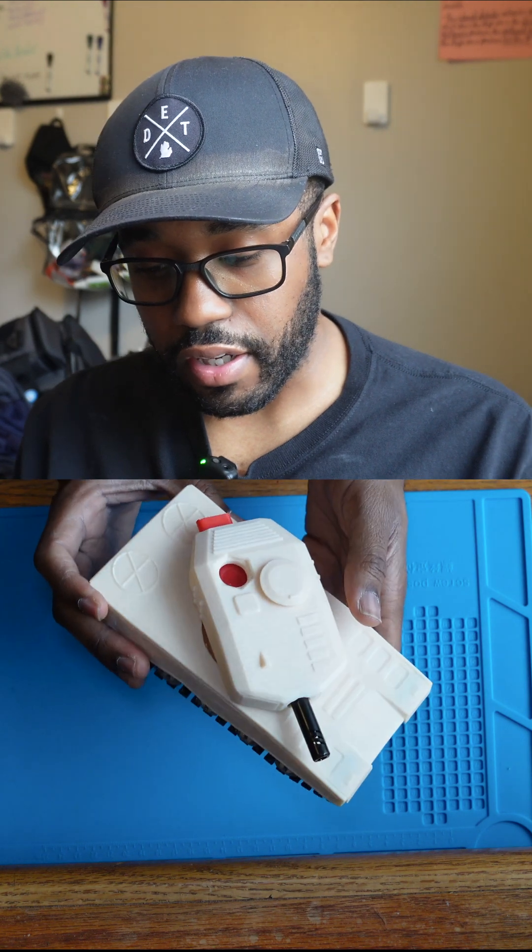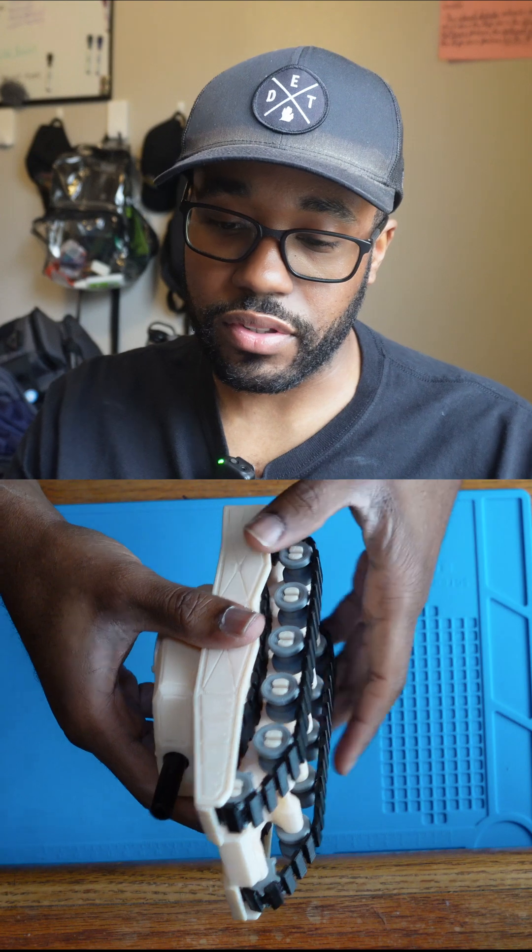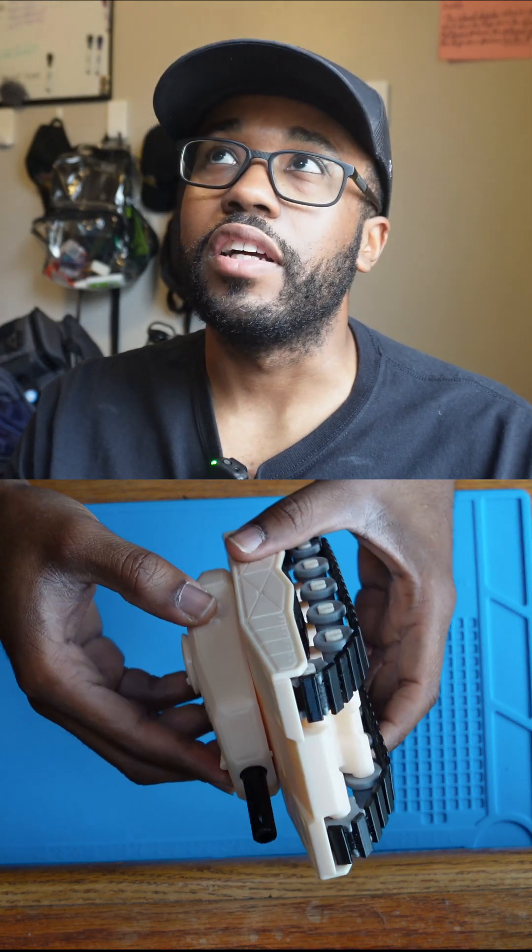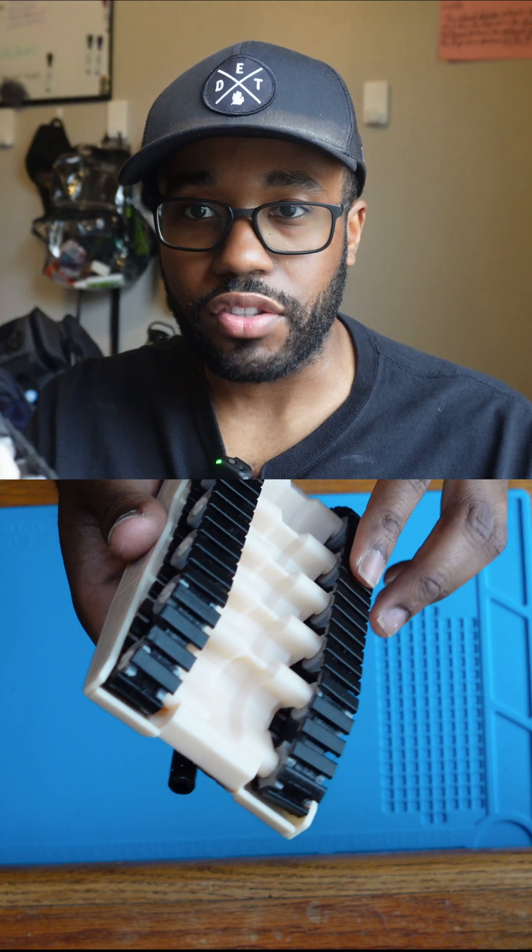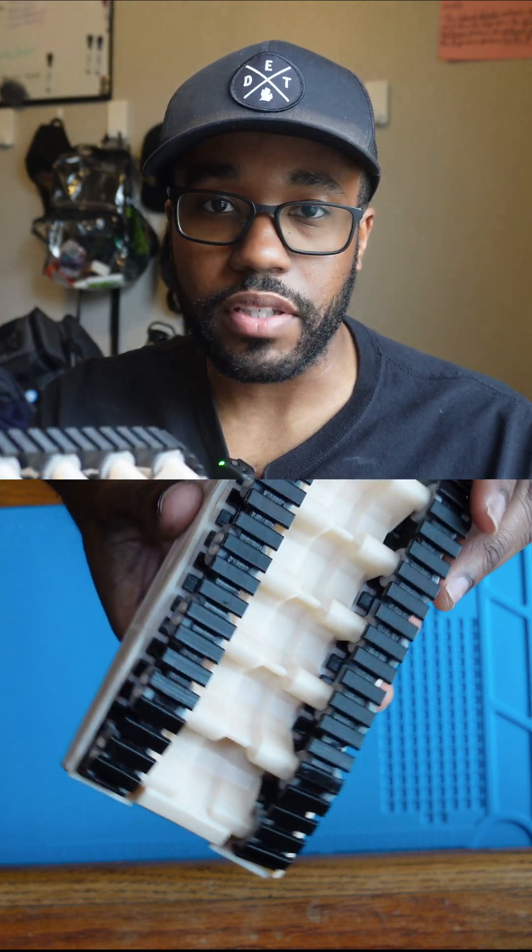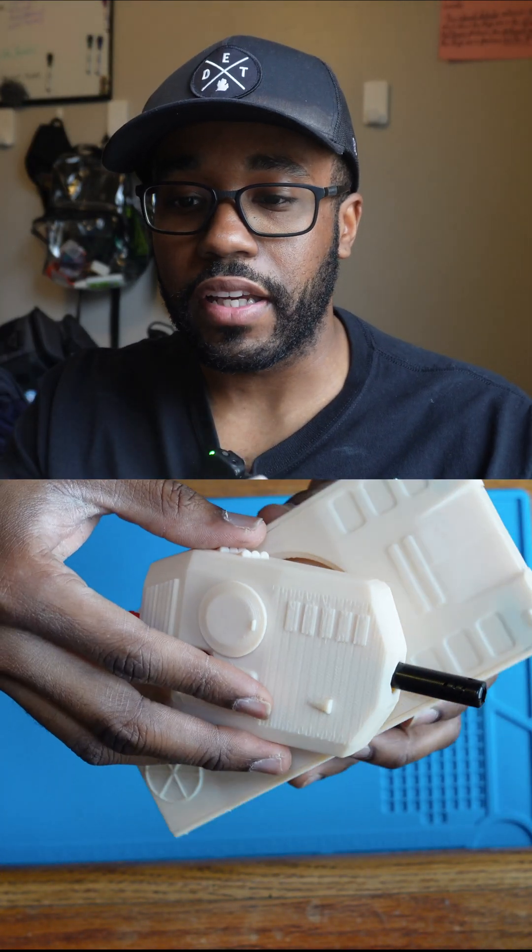It's completely 3D printed and uses pretty much all PLA - the whole chassis and the wheels, everything. The only thing that's not PLA are the tracks themselves. The tracks are made out of TPU filament, so they're flexible. You can see here the flexibility in the tracks, but yeah, the rest of it is PLA.